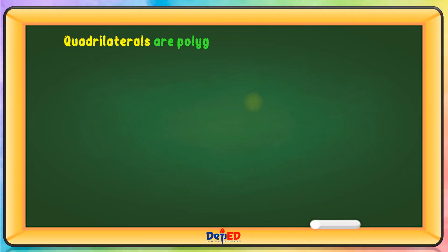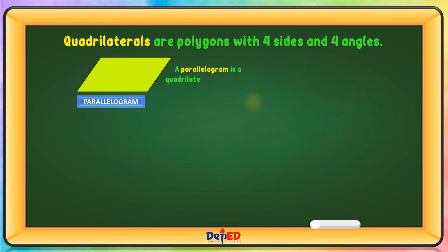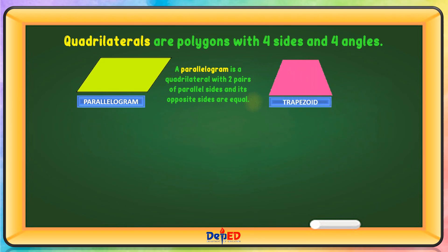Quadrilaterals are polygons with four sides and four angles. A parallelogram is a quadrilateral with two pairs of parallel sides and its opposite sides are equal. A trapezoid is a quadrilateral with only one pair of opposite sides that are parallel.